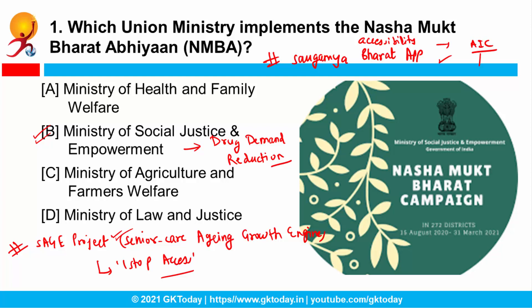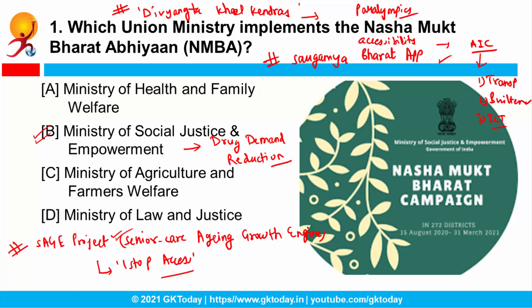The Accessible India campaign has three pillars: first, the transportation sector; second, the built environment; and third, the ICT ecosystem in India. Also, the Social Justice Ministry is set to establish Divyangata Khel Kendras to promote the interests of Divyangjans in sports and improve their performance in the Paralympics. Can you tell me when we celebrate World Elder Abuse Awareness Day? Please write in the comment section if you know.